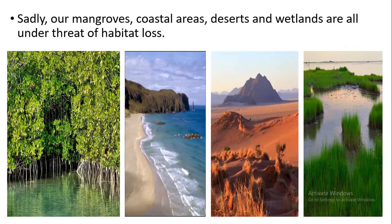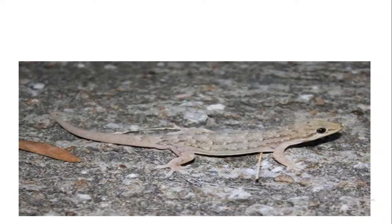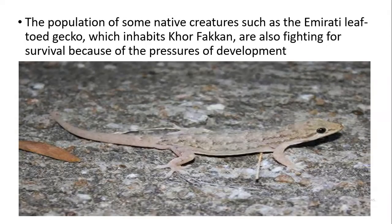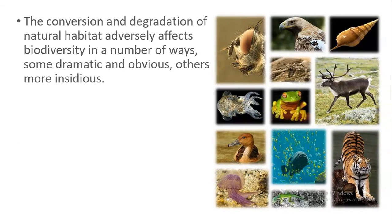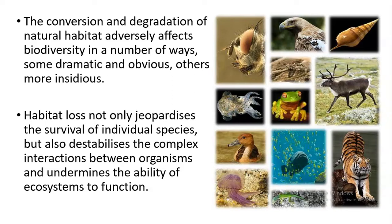In places like mangroves, coastal areas, deserts, and wetlands, habitat loss is taking place, leading to extinction of species. One such species is the Emirati leaf-toed gecko, which lives in Khor Fakkan and is fighting for survival due to habitat destruction. The degradation of habitat is one of the main reasons for extinction, directly affecting the biodiversity present in the world.